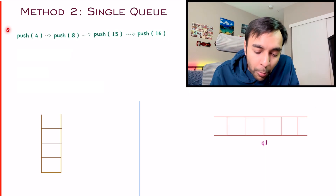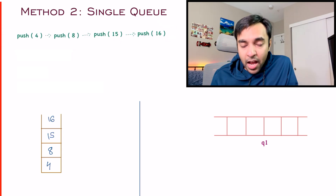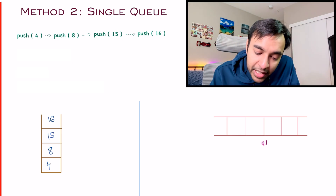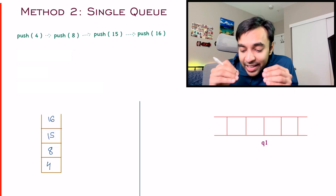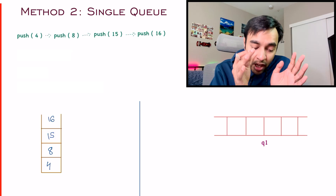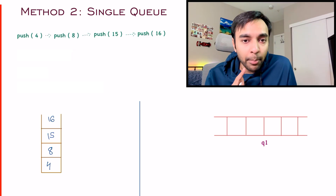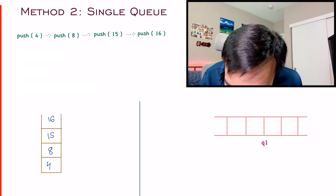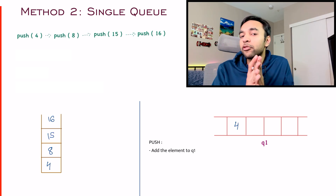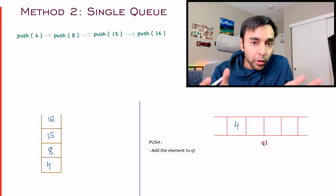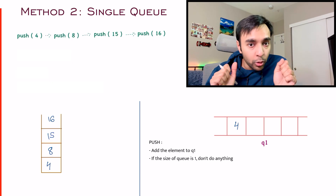I have four push operations first, so I add four elements to my stack. Now in the queue, you cannot simply add all elements this time because then this method won't be different. The first element I add is 4. Since it's a single element, you don't have to do anything about it — the size of your queue is 1. It will behave the same whether it's a stack or a queue.